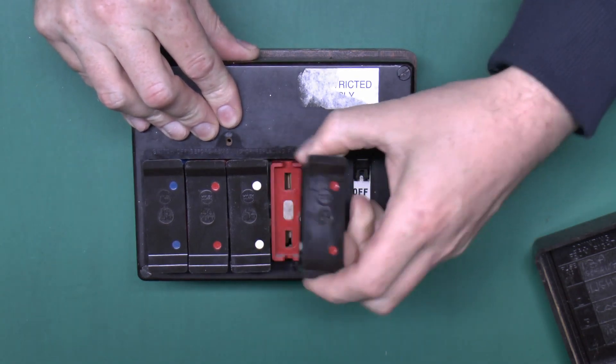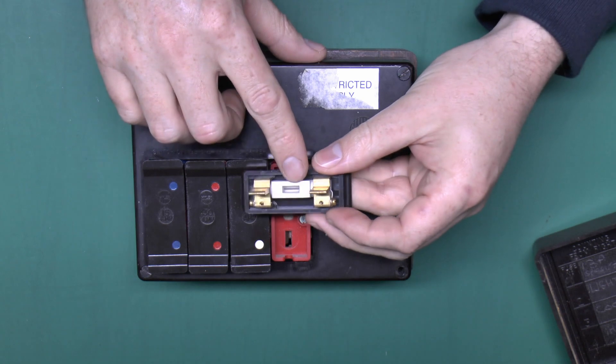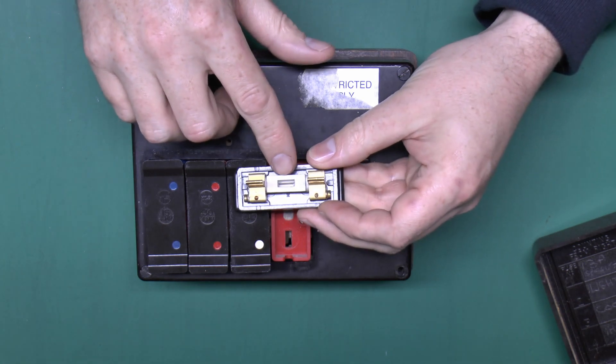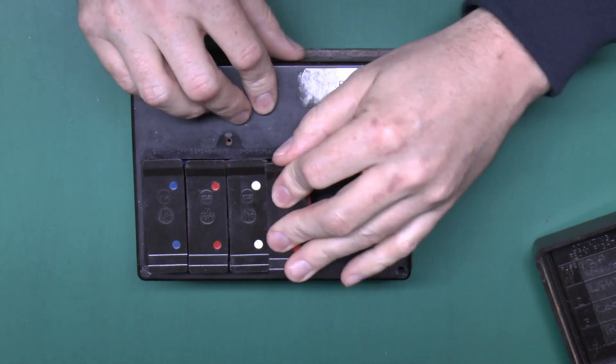These simply pull out and if you look in the back you can easily see in the center there whether the wire is intact or not. That particular one is, so that's fine.